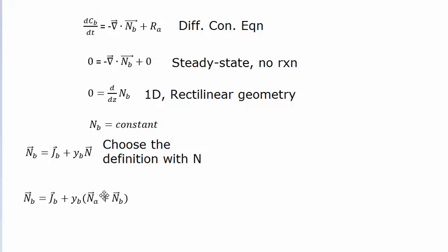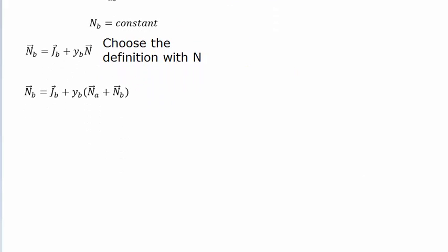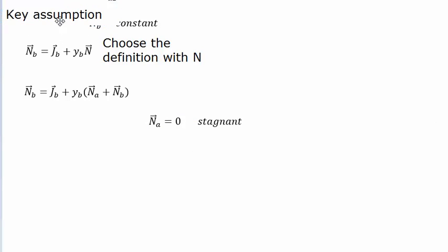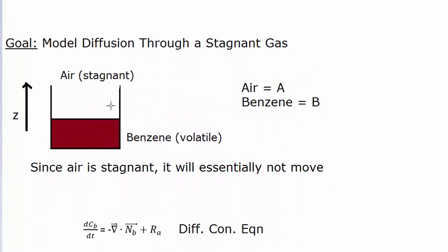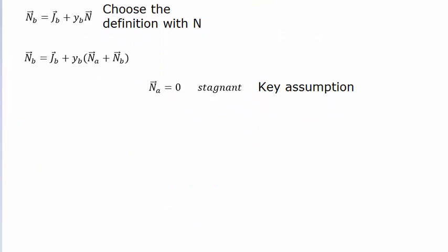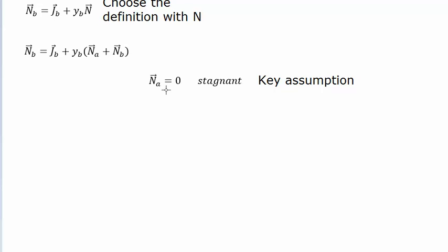Since it's a binary system, the total flux is the flux of species A plus the total flux of species B. Here is the key assumption: since the gas is stagnant, the total flux of species A — the air — is going to be zero. Anytime a species is stagnant, you can assume the total flux of that species is zero.